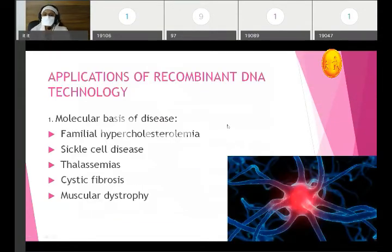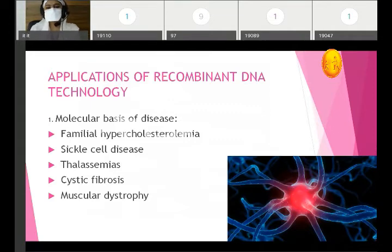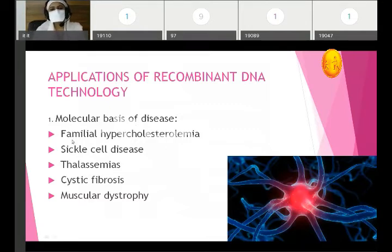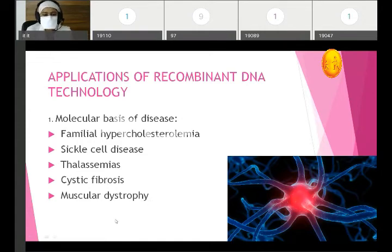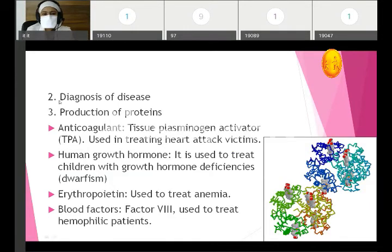These are the applications of recombinant DNA technology. First is molecular basis of disease — understanding the biochemical basis of disorders. The disorders include familial hypercholesterolemia, sickle cell disease, thalassemia, cystic fibrosis, and muscular dystrophy. Second application is diagnosis of various disorders — various kits are available using which we can diagnose various disorders.